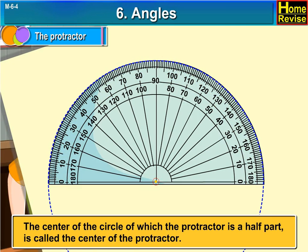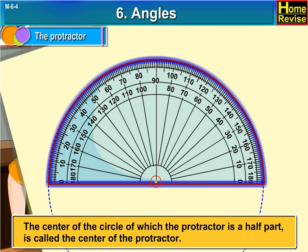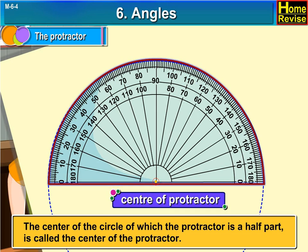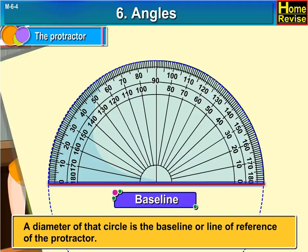The center of the circle of which the Protractor is a half part is called the center of the Protractor. A diameter of that circle is the baseline or line of reference of that Protractor.